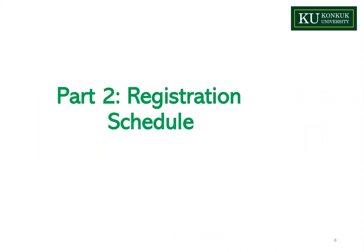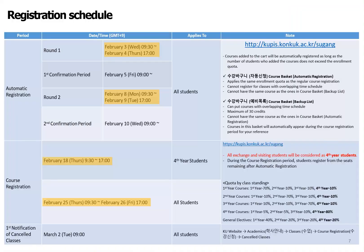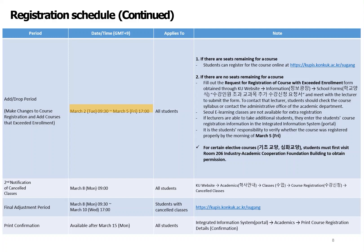Part 2 is about registration schedules. If you want to make changes to your course registration, you can do so from March 2nd, Tuesday at 9:30 a.m. to March 5th, Friday at 5 p.m. This applies to all students, and there are two ways to do it. First, if there are seats remaining, you can register at the same site as before. Second, if no seats remain, you can fill out the request form for registration of a course with exceeded enrollment, available on the Konkuk University website. You can check more information in this presentation video.